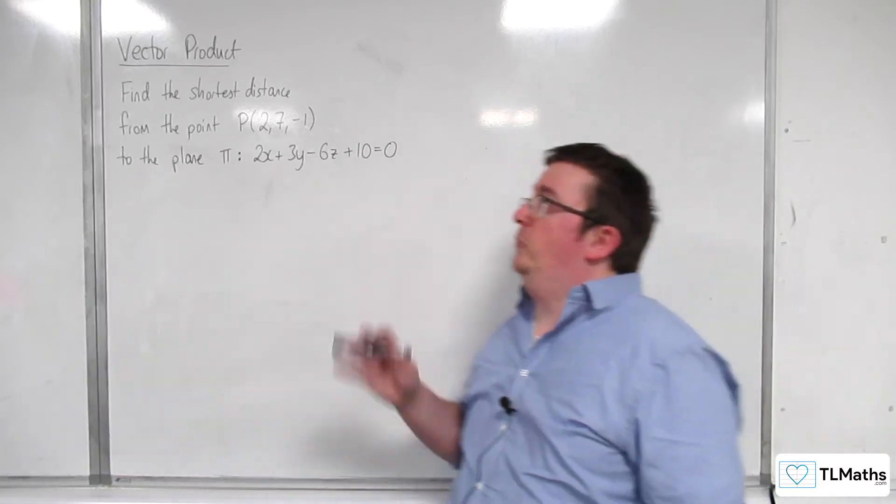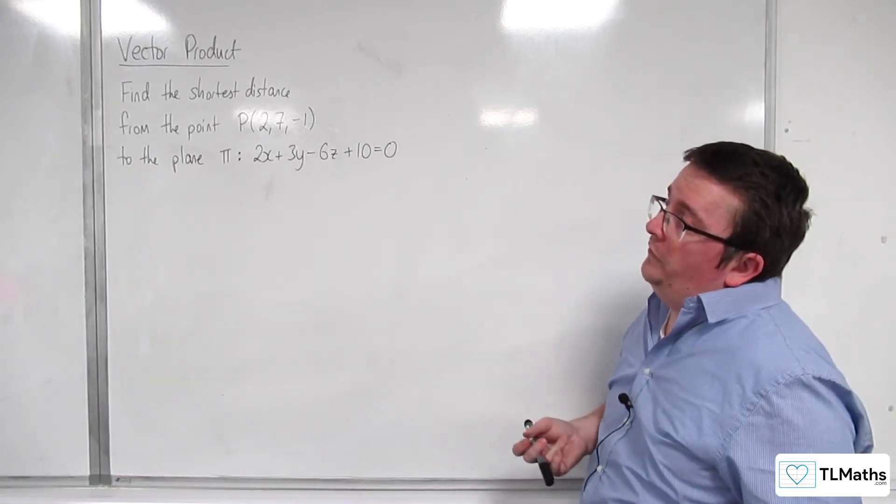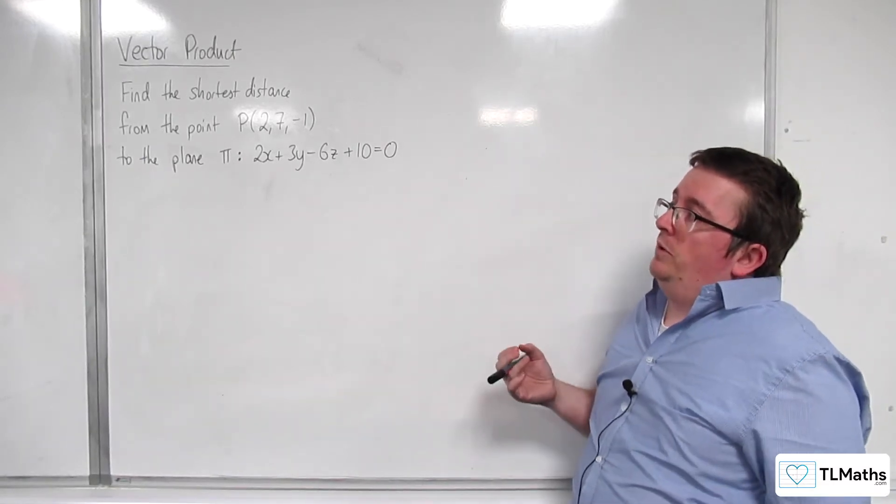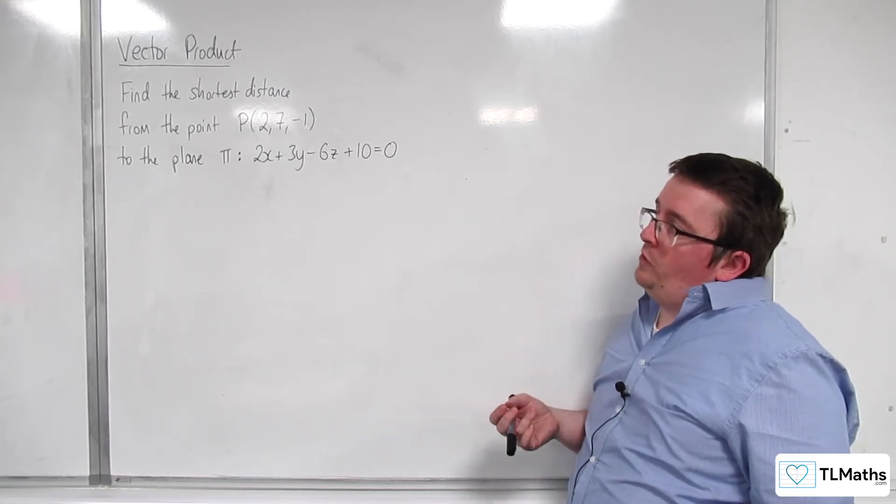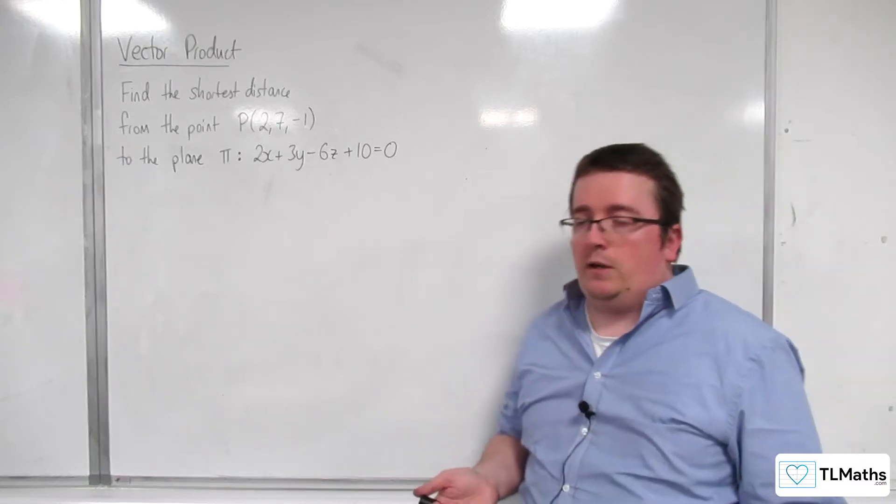In this video we're going to explore how we can find the shortest distance from the point P with coordinates (2, 7, -1) to the plane π with the equation 2x + 3y - 6z + 10 = 0.